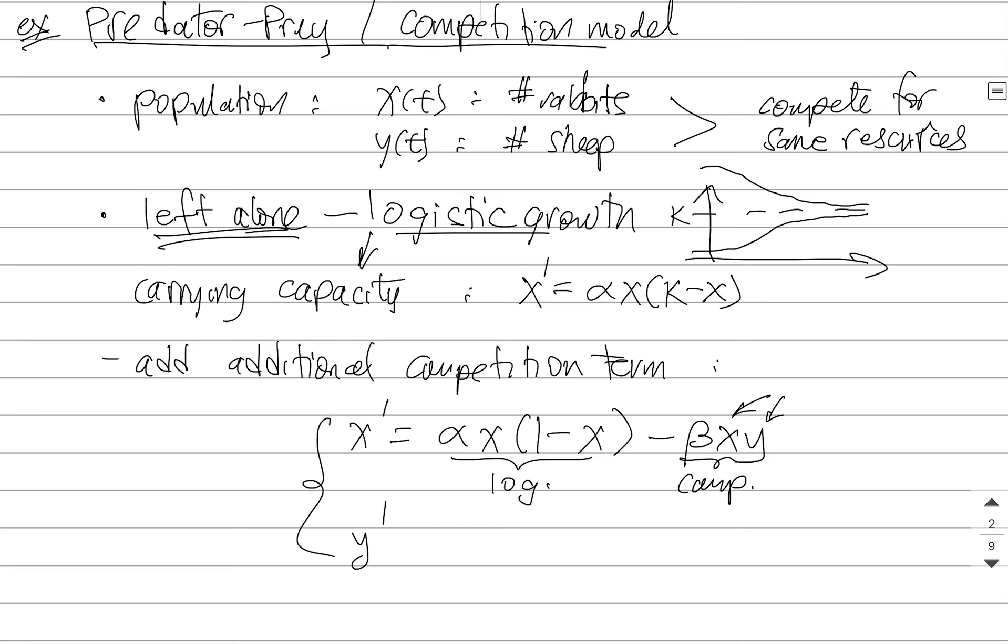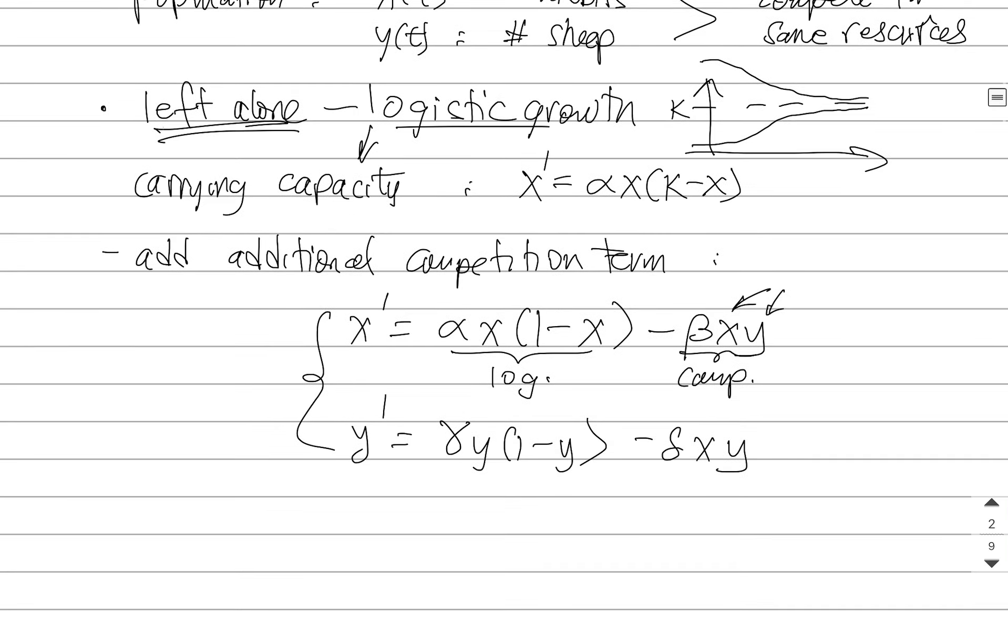And similarly, the sheep would have their own term. So you could say something like gamma y, 1 minus y. There would be logistic growth if the sheep population was left alone. And then there'd be a competition term. And so once again, you've got a non-linear system.